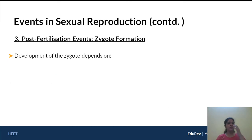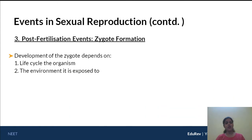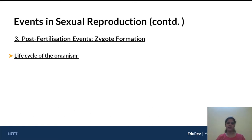Further development of a zygote depends upon two features. The first is what is the life cycle of that particular organism, and the second is what type of environment it is exposed to. Let's go through the first part — the life cycle of the organism.